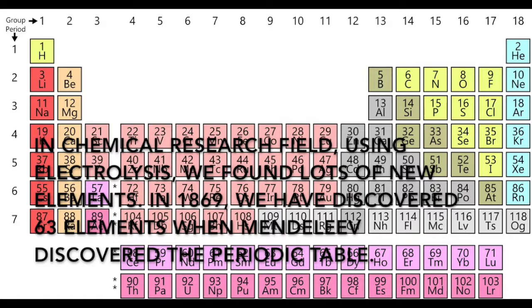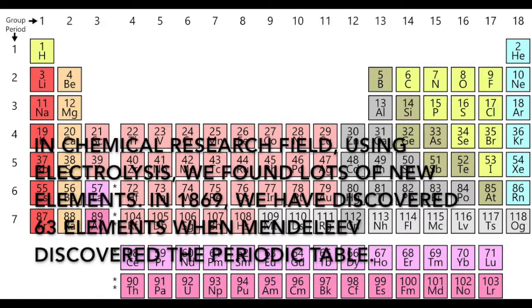In chemical research field, using electrolysis we found lots of new elements. In 1869, we had discovered 63 elements when Mendeleev discovered the periodic table.